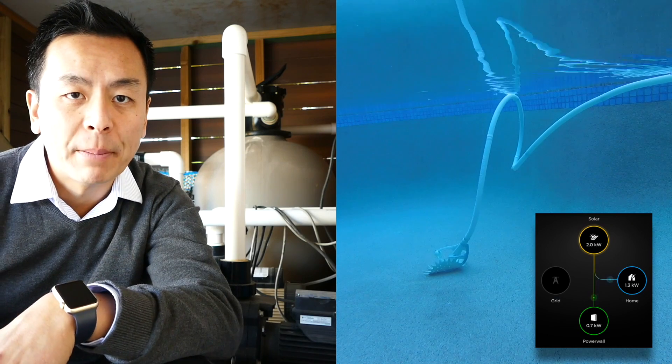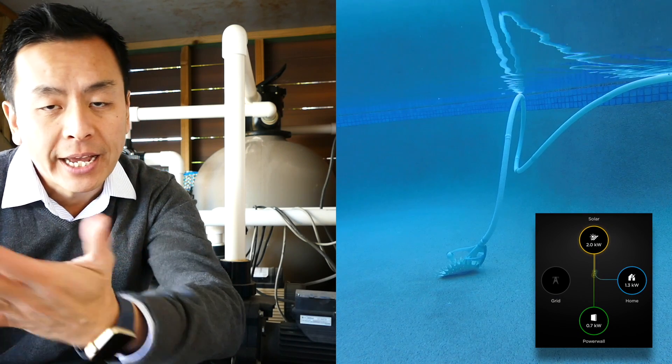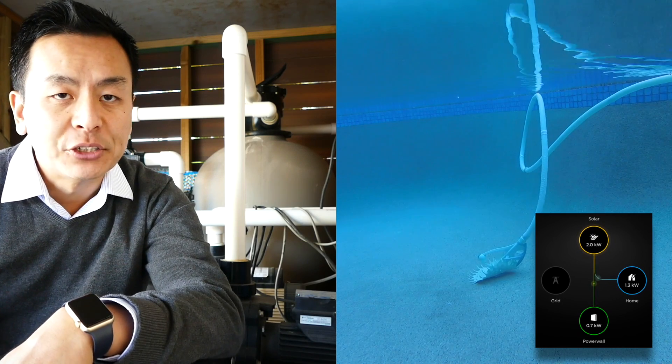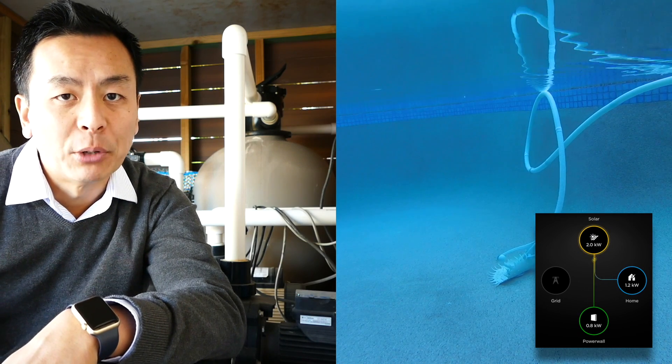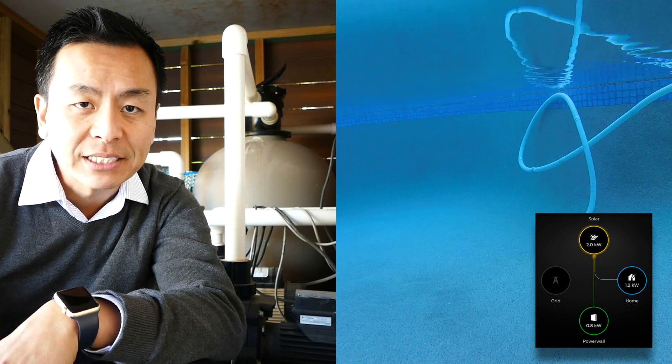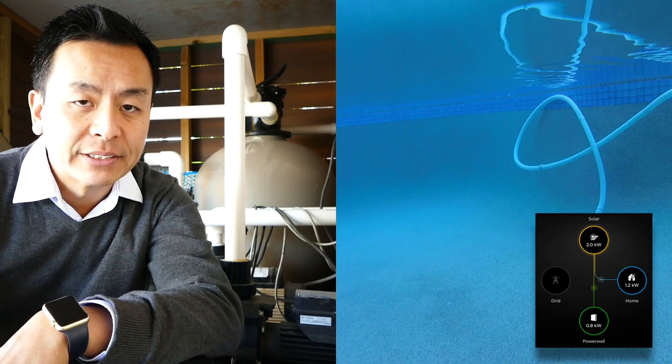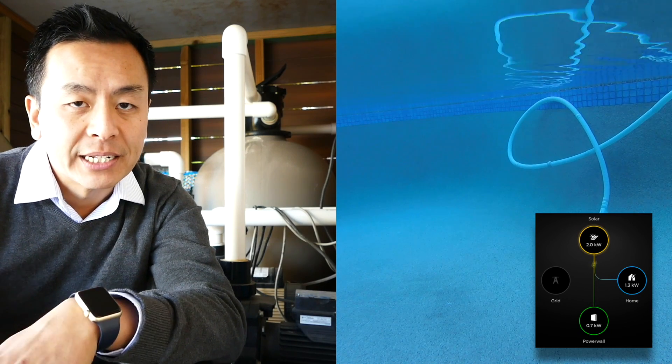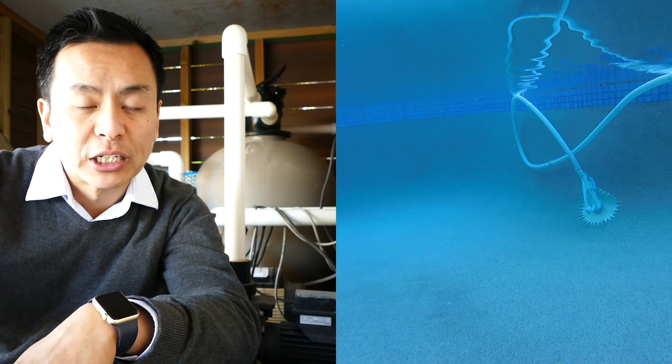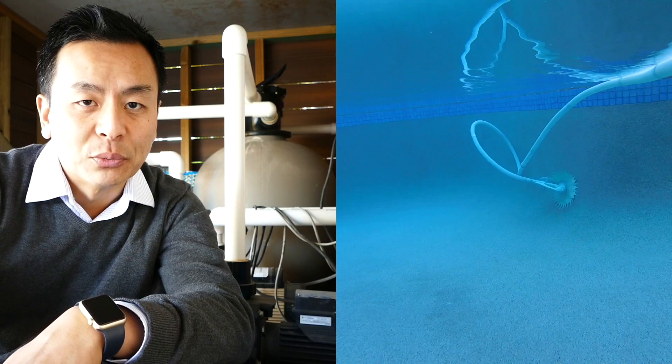So currently I've got my pool pump on the high setting and as you can see on my Powerwall 2 app it's consuming about 1.2 kilowatt at the moment. There's a bit of a baseline of about 0.2, 0.3 for the house, the fridge and anything else that's running in the house. But let's see what happens when we reduce it to medium. I've also got a live feed of my pool cleaner as you can see and it's doing a pretty good job under the water at the moment.